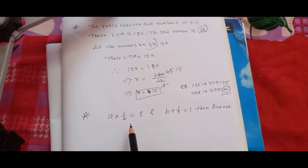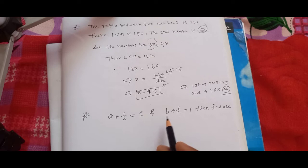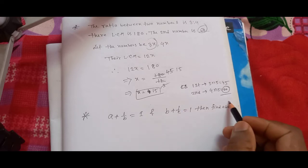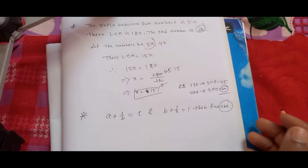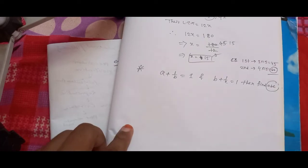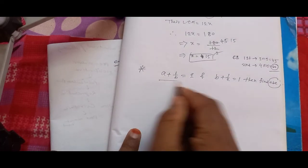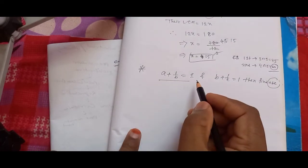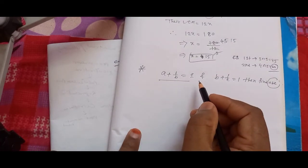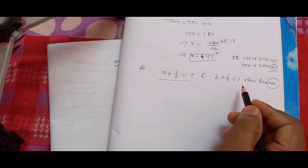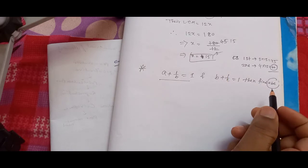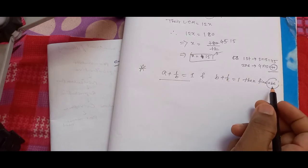If a plus 1 by b is equal to 1, and b plus 1 by c is equal to 1, then find a b c. Two equations are given: a plus 1 by b is equal to 1, and b plus 1 by c is equal to 1. We need to find a b c.